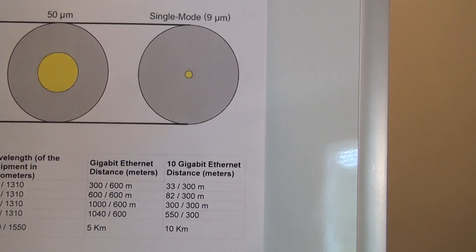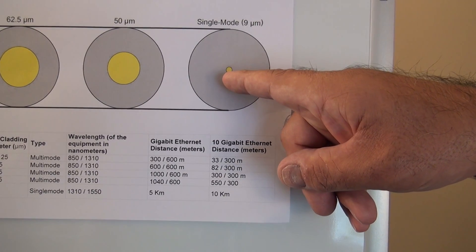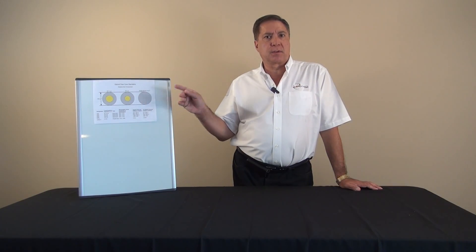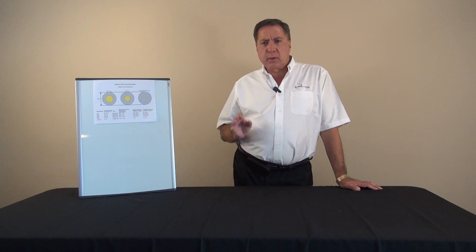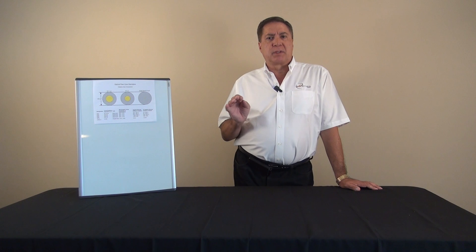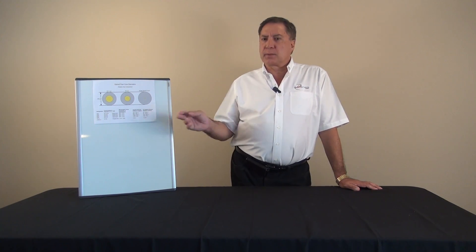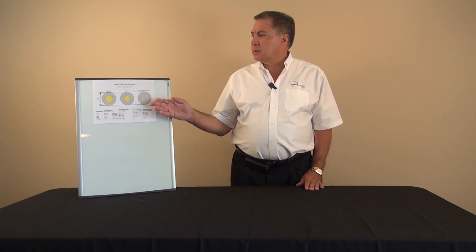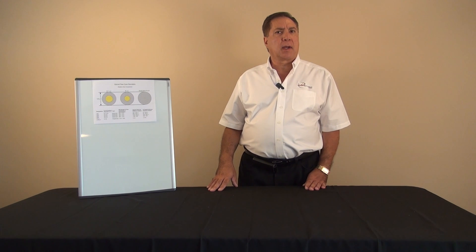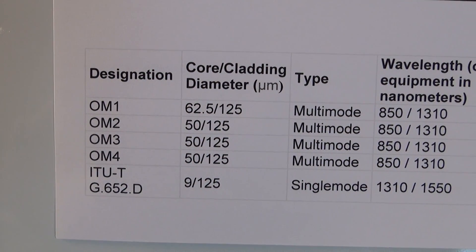Here we see that the core for single mode cable is much smaller than the multi-mode cables. The reason for this difference is because single mode requires a very small core to transmit its laser light. For today's discussion, however, we will concentrate on the different forms of multi-mode cable. As you can see from the chart, different fiber core types have vastly different limitations for speed and maximum distance.